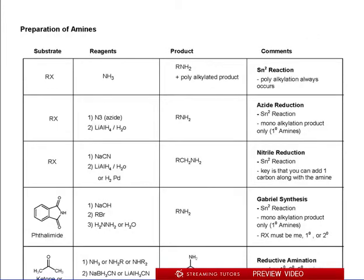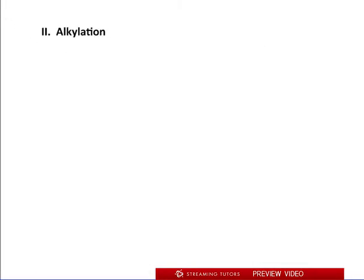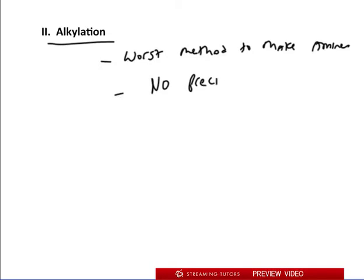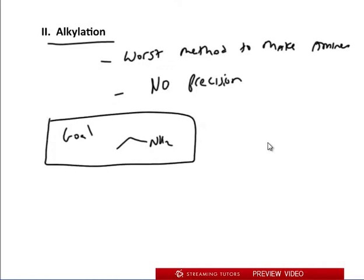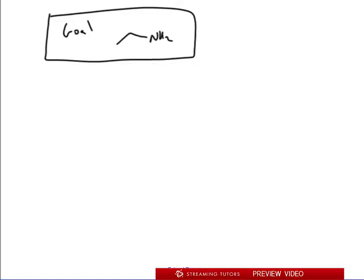Let's get started. The first reaction is called alkylation, and this is actually the worst method to make amines — write this down. There is no precision. If you want to make a primary amine, you could really never do this reliably with this method. For example, if our goal is to make ethylamine, what we would have to do is take an ethyl bromide and treat it with NH3.